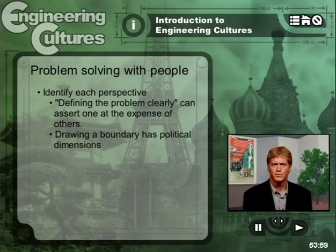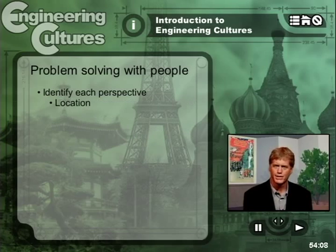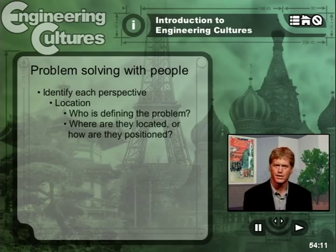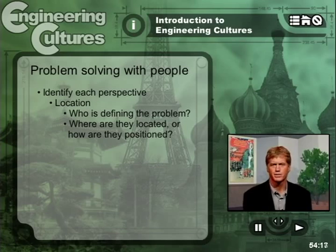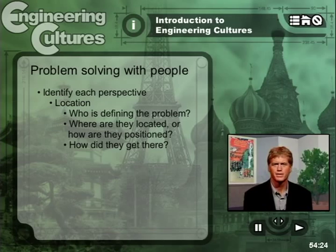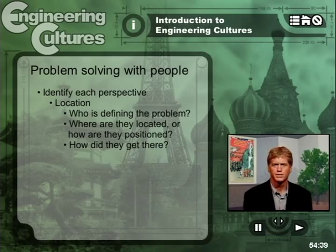To help you think through the features of each perspective you encounter, we offer the words location, knowledge, and desire. Location: Who is defining the problem? Where are they located, or how are they positioned? Consider a debate between design engineers and manufacturing engineers. How did they get in their positions? Do you know anything about the history of these positions, and what led to the particular configuration of positions you have today? Where are the key boundaries among different types of groups, and where are the alliances? All these issues are crucial to consider while locating the perspectives you encounter on the job.